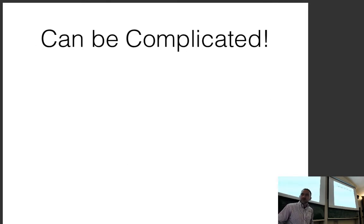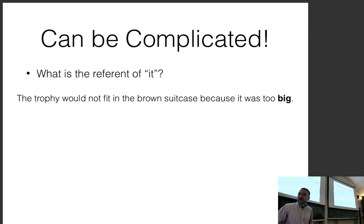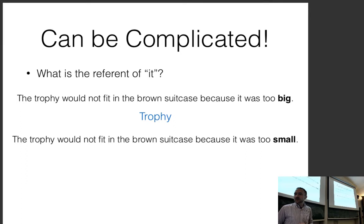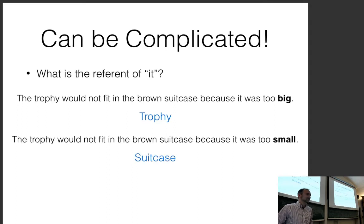These cases of agreement can be complicated. For example: 'The trophy would not fit in the brown suitcase because it was big' — what does 'it' refer to? Probably 'trophy.' And 'The trophy would not fit in the brown suitcase because it was small' — 'suitcase.' This is co-reference resolution, and specifically this is called the Winograd schema.